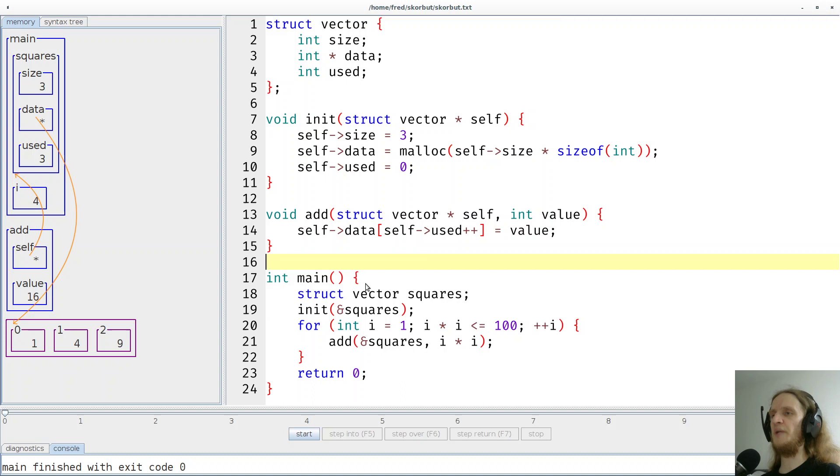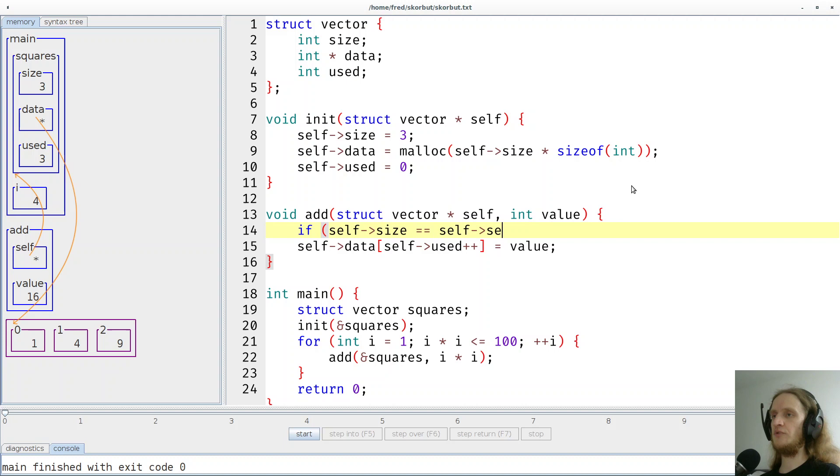So let's simply check for that. So if the size and the use count are exactly the same or are equal, in our case 3, then we have to do two things. We have to increase that number from 3 to 6, for example. Let's simply double the number. And after we have changed this integer, we have to make this array bigger.